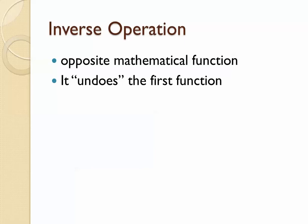So to do that, we need to talk about an inverse operation. An inverse operation is the opposite mathematical function. Mathematical functions are the things that we do: adding, subtracting, multiplying, dividing, squaring, square rooting — all of those things. So an inverse is something that undoes the first function, and we've been doing that all the way along. If we want to get rid of an adding 3x, we subtract 3x. We do the opposite because it undoes it.